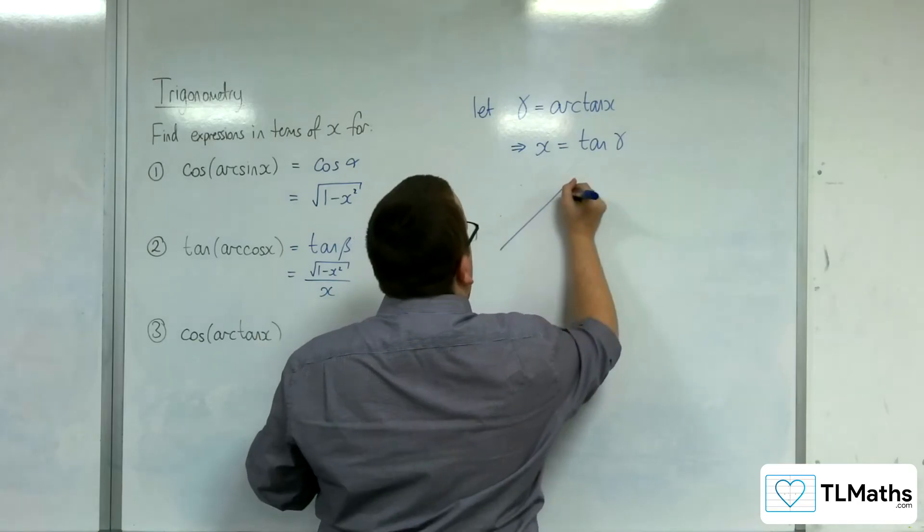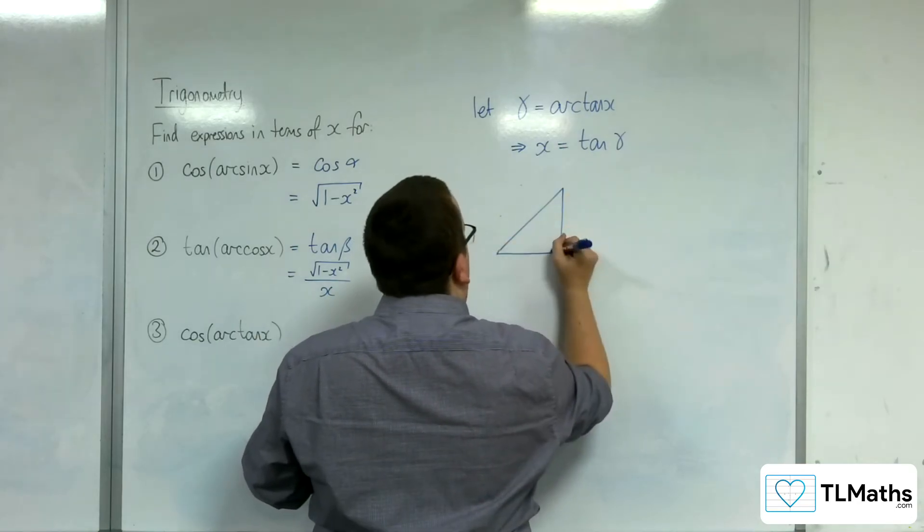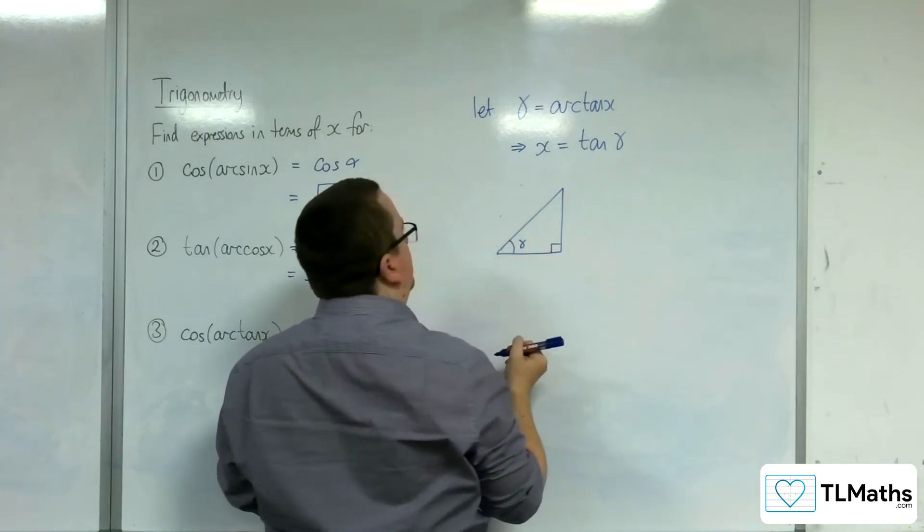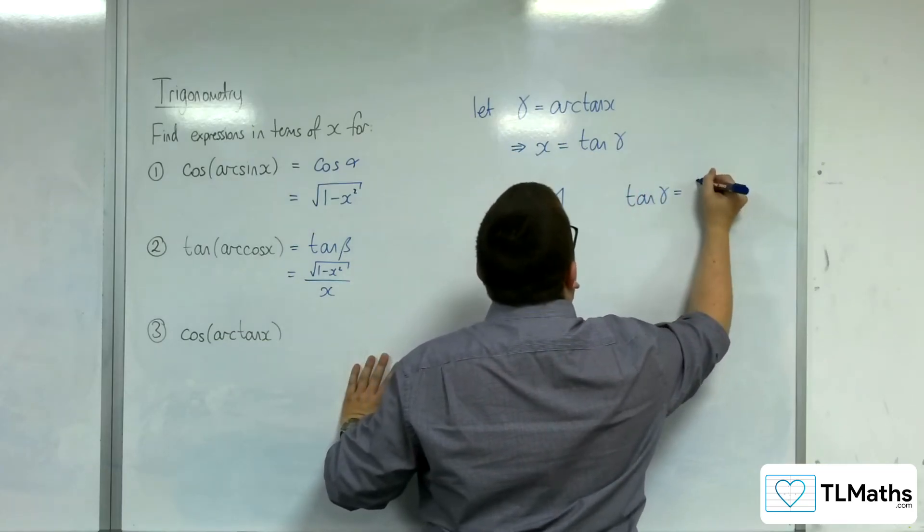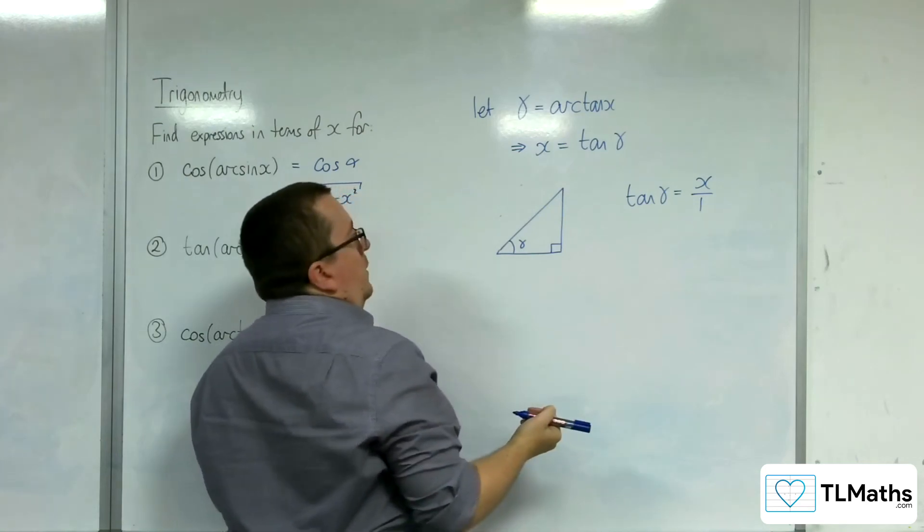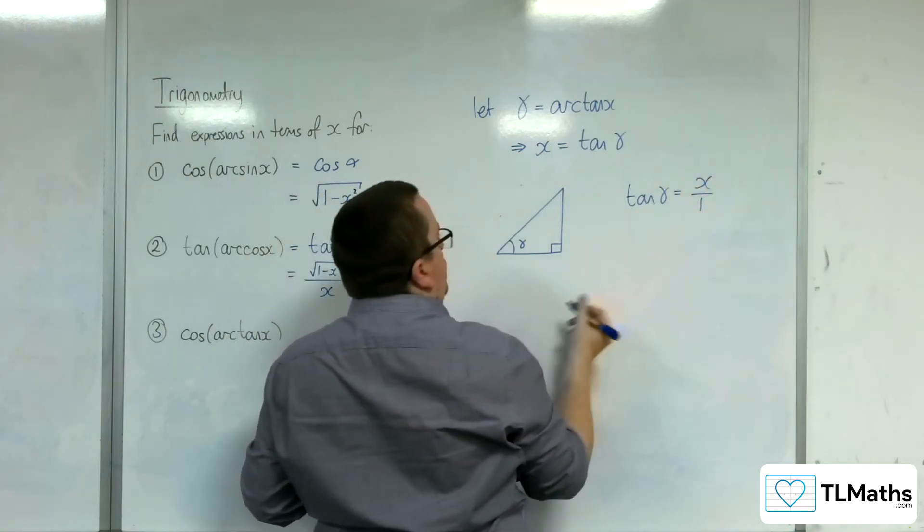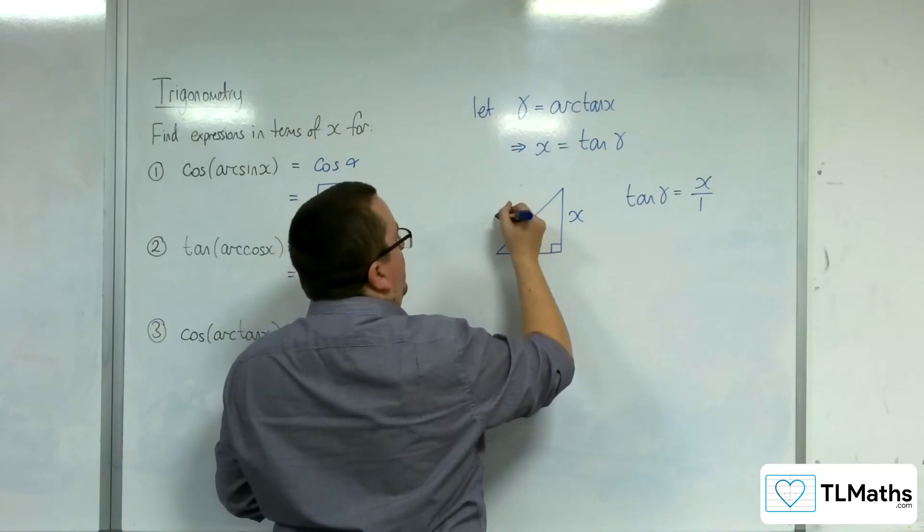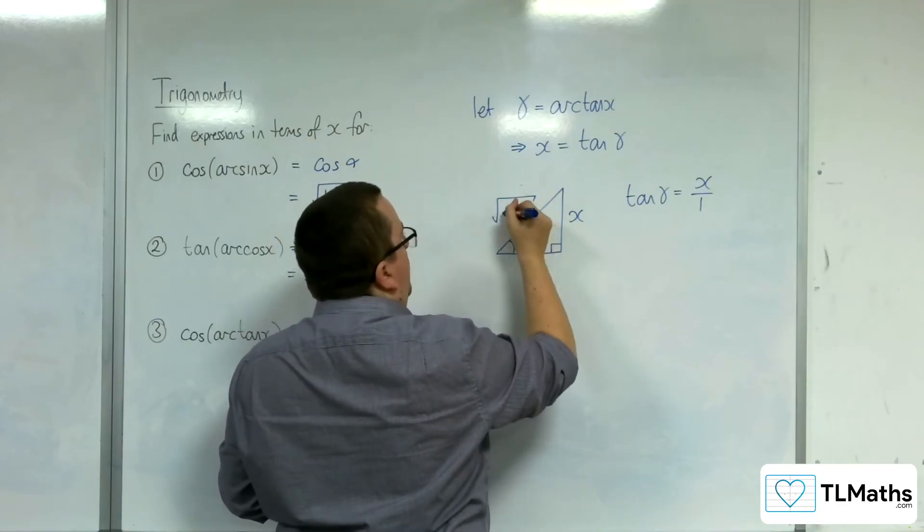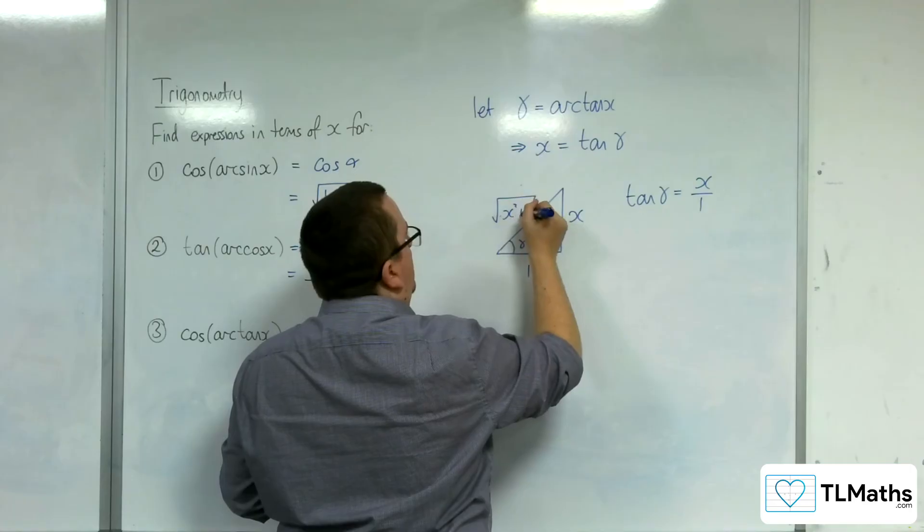Draw a right angle triangle. There's gamma. So if tan of gamma is equal to x, we could write that as x over 1. So that's opposite over adjacent. So the hypotenuse is the square root of x squared plus 1.